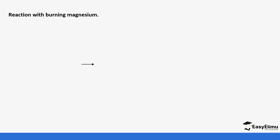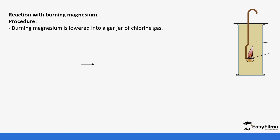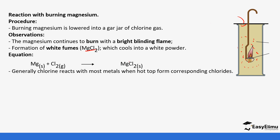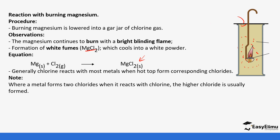Chlorine also reacts with magnesium. If you lower a burning piece of magnesium into a jar containing chlorine, it burns brightly — magnesium produces a lot of heat — forming white fumes of magnesium chloride, which cool into a white powder. Unlike aluminium chloride and iron(III) chloride, magnesium chloride does not sublime. Chlorine reacts with most metals to form their corresponding chlorides.